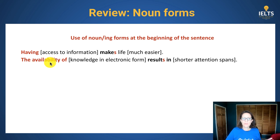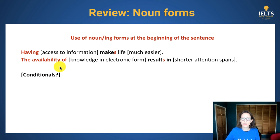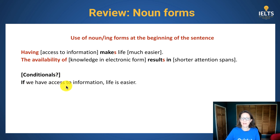Another noun form: 'the availability of knowledge' — and what happens? It results in a negative effect. Both of those noun forms could be turned into a conditional. Can you try to say the same thing in a conditional way? For example, if we have access to information, life is easier. Having access makes life easier.